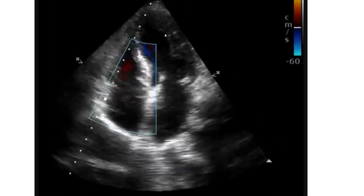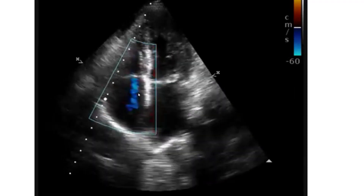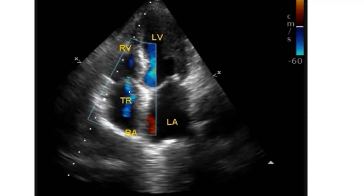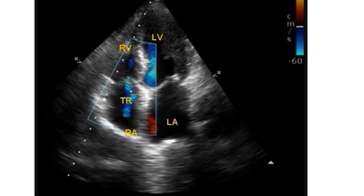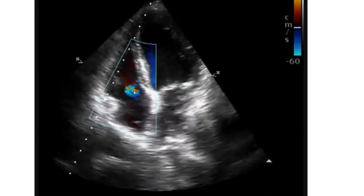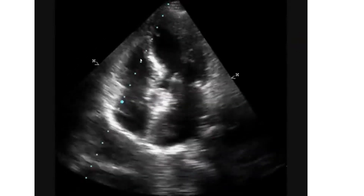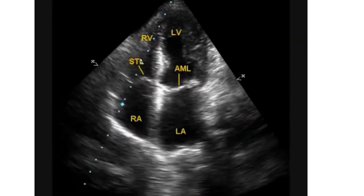The left ventricle is seen here. You can see a jet of color — blue color — that is the tricuspid regurgitation jet. You can see that the jet is flowing from the right ventricle to the right atrium.